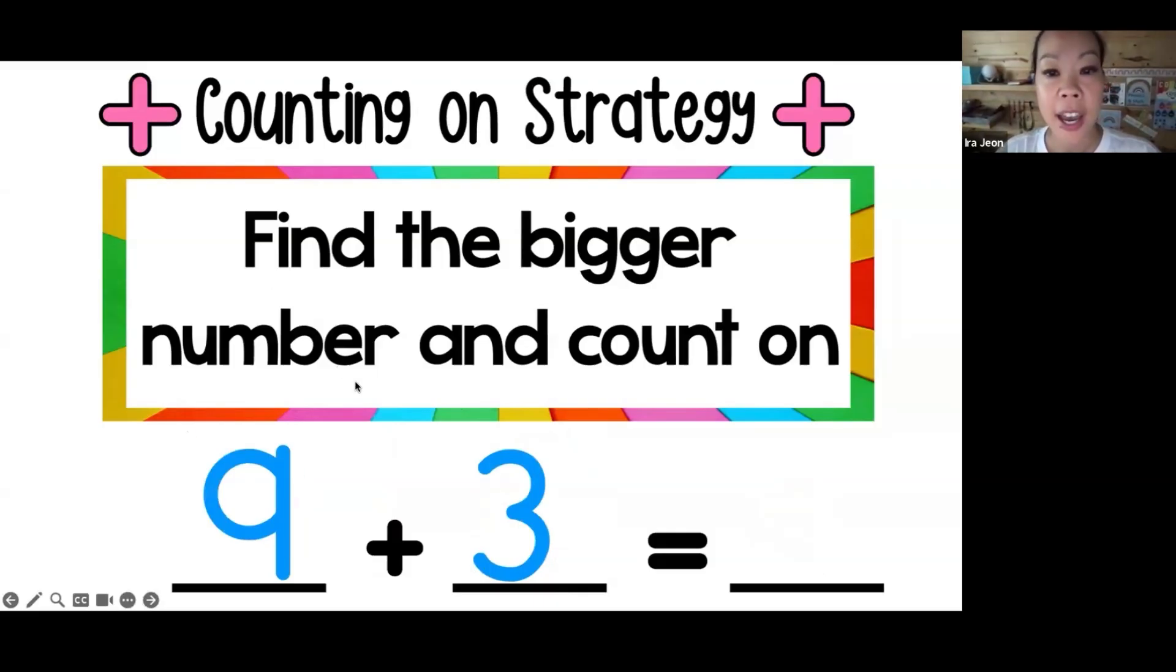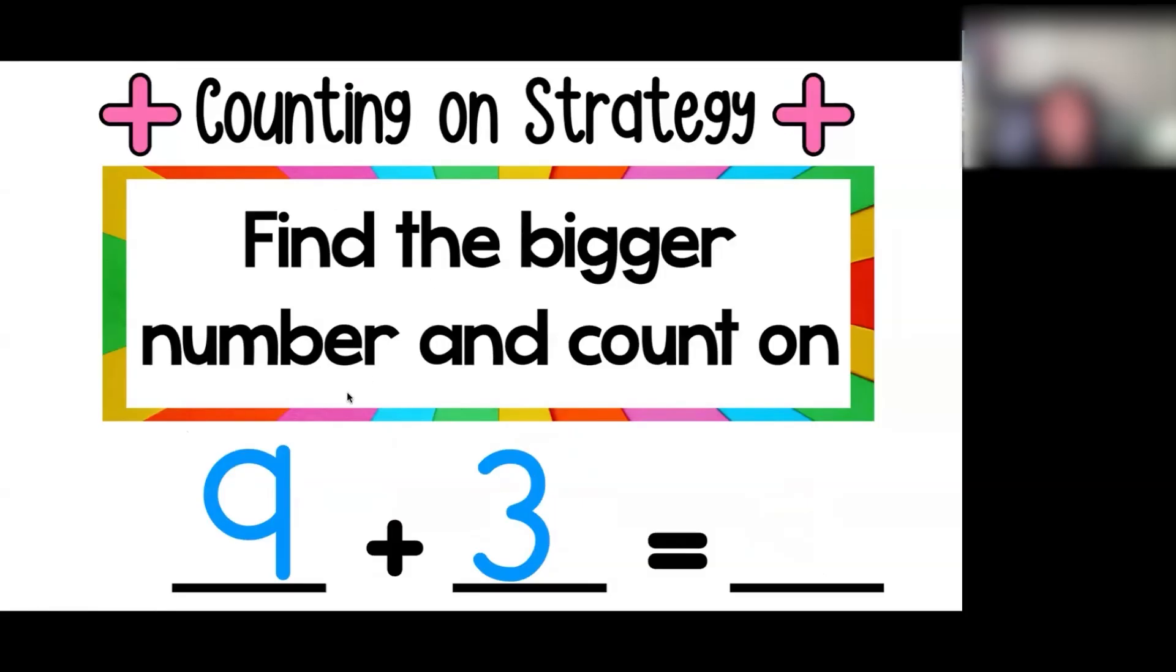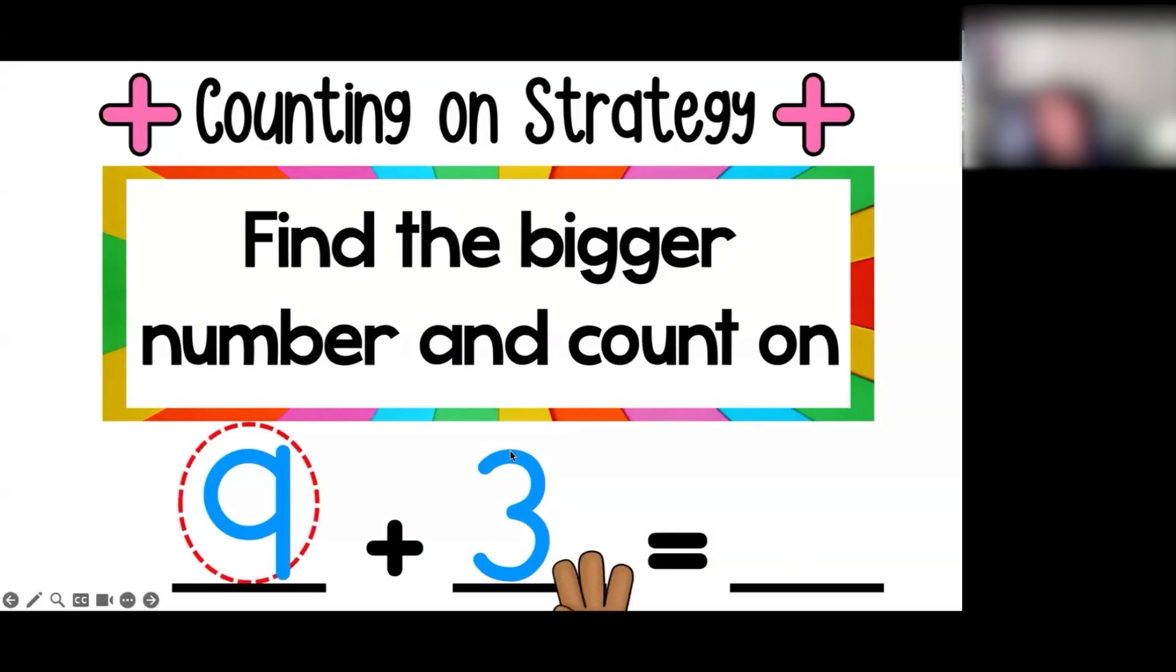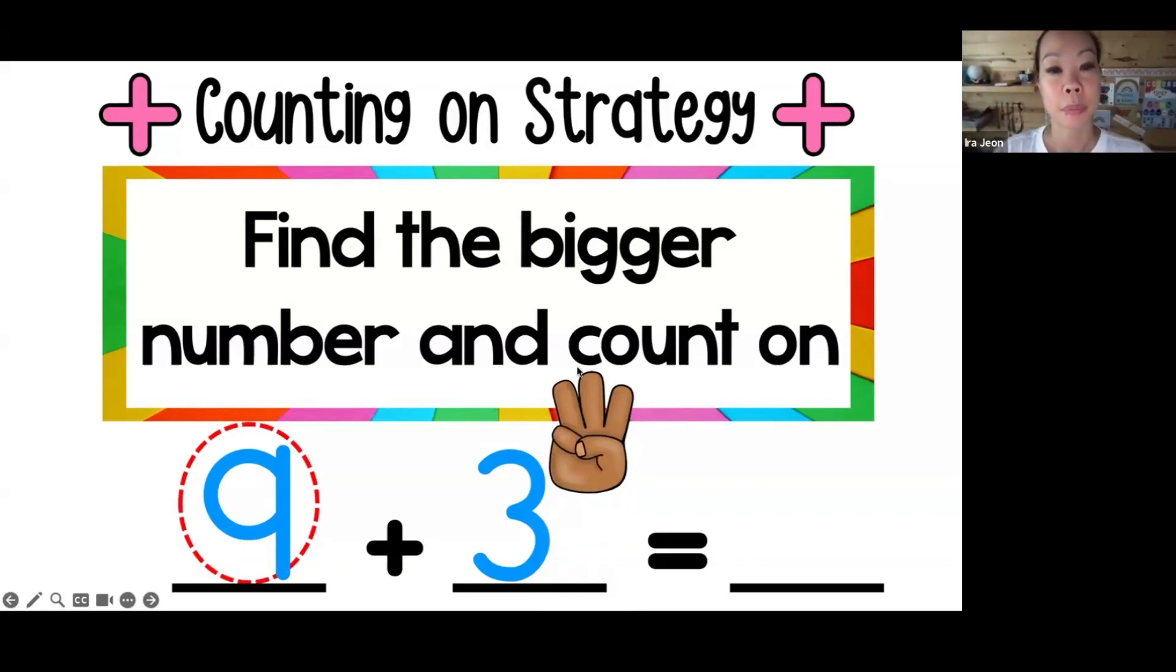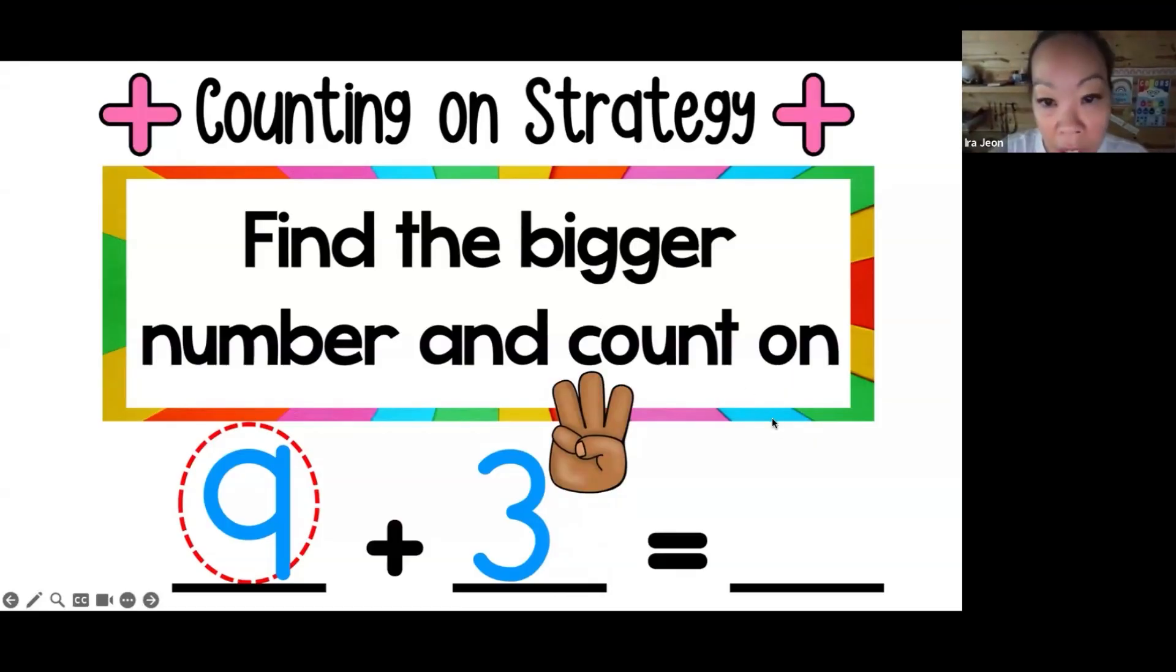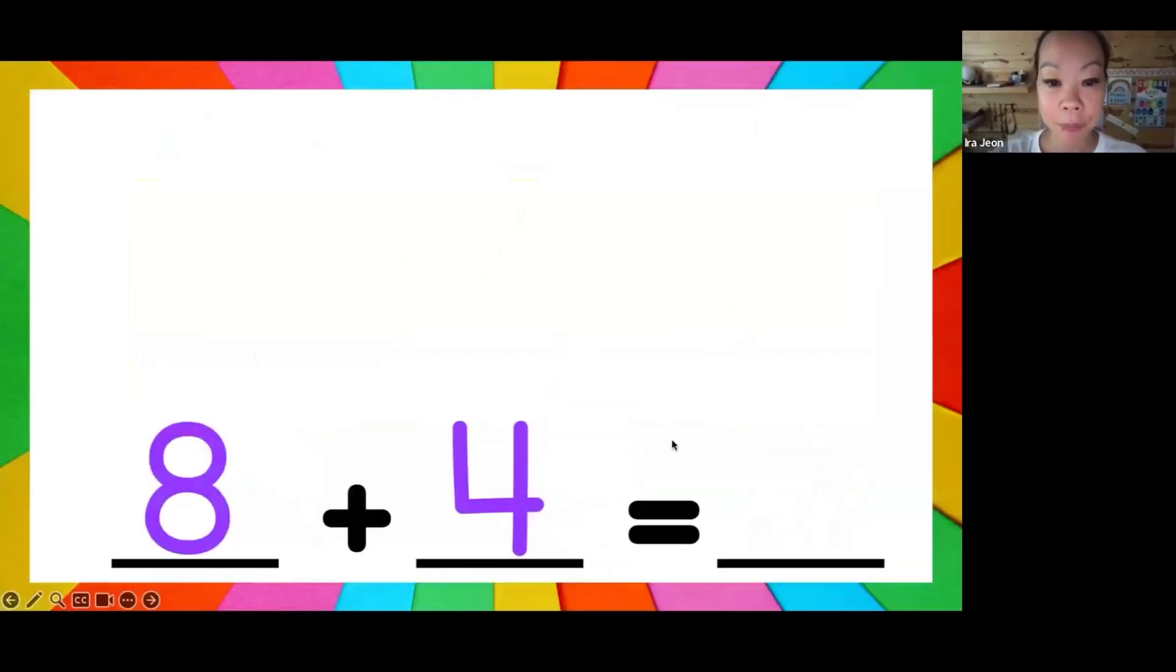Now let's try it with a little bit bigger number past ten. Here we have 9 and 3. Who wants to show how to do the counting on method? What number should I count on from? Yes RV, what number should I count on from? Nine, good. And then you're going to hold up how many fingers? Three, good. So can you show us how you do it? So nine, put nine in your head, hold up three fingers and you go: 10, 11, 12. Good, everybody got 12?